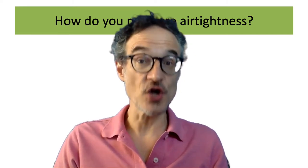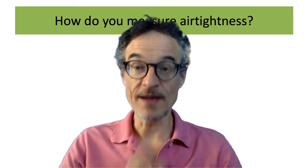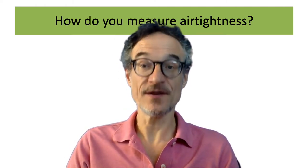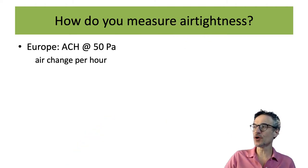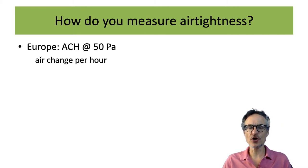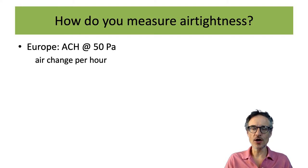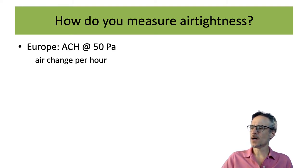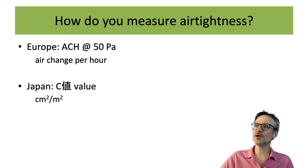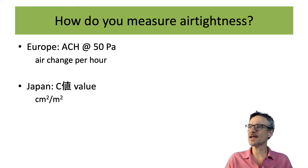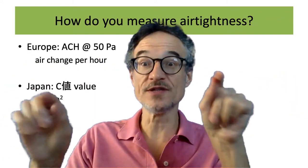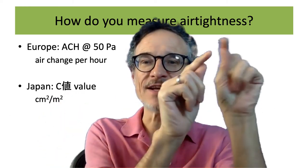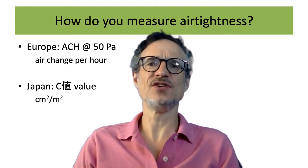We can measure most things if we try, and if we want to make a low energy building we need to measure — so we can find out how much energy we're actually using. In Europe, the measurement is usually air changes per hour at 50 pascals. Japan uses the C-value (shichi), which is in square centimetres per square metre — if you imagine any wall has lots of holes and you add up the area of those holes, that gives you the C-value.